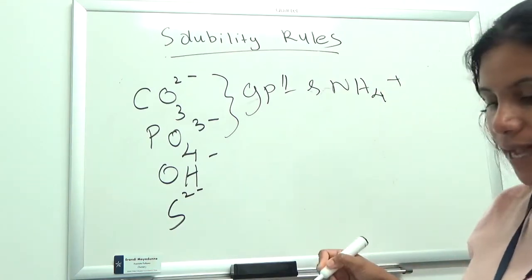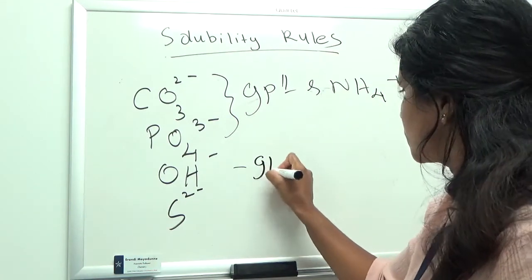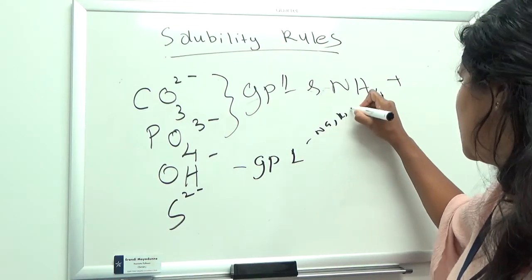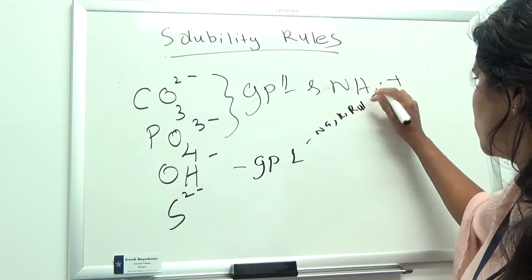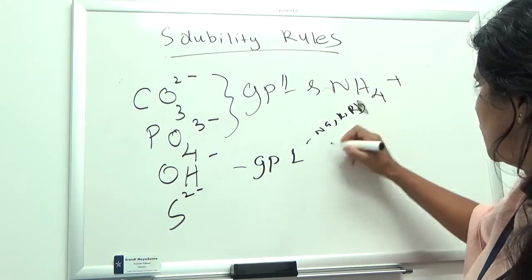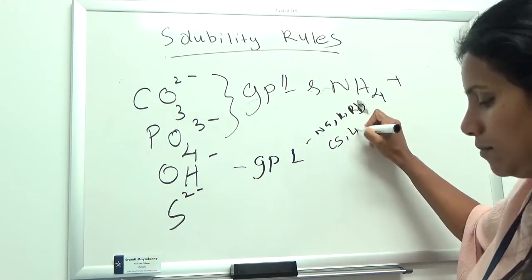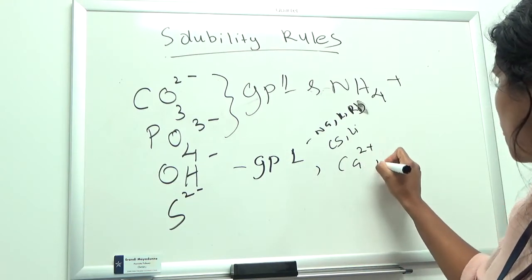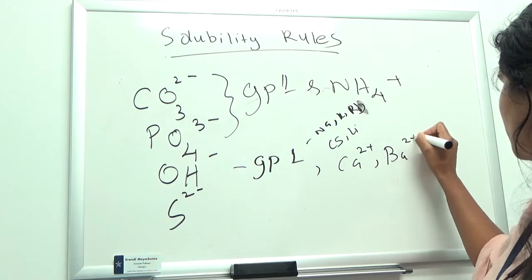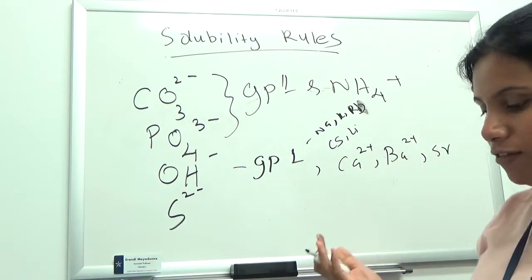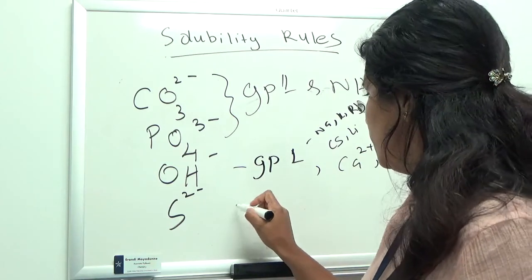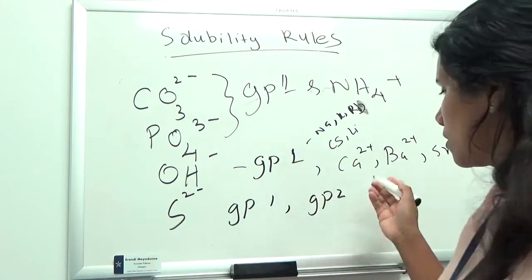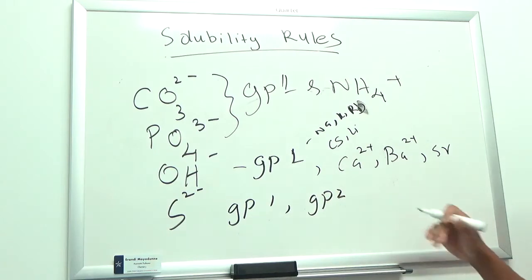For hydroxide, the exceptions are Group 1 metals — sodium, potassium, rubidium, cesium, lithium — plus calcium, barium, and strontium. For sulfide, the exceptions are Group 1 and Group 2 — meaning calcium, strontium, barium — and ammonium. Compounds of these cations with hydroxide or sulfide are soluble.